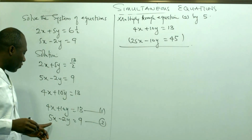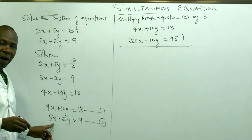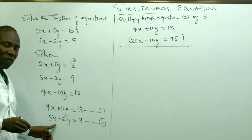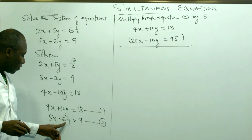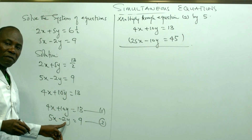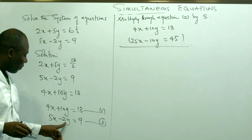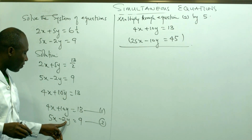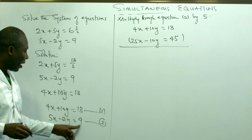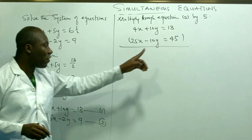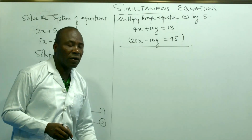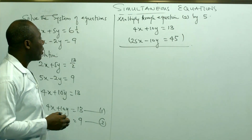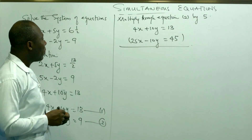If I multiply the 5x term by 5, that gives 25. The 2y term times 5 gives minus 10. And 9 times 5 gives 45. So equation 2 multiplied by 5 is confirmed as 25x minus 10y equals 45.